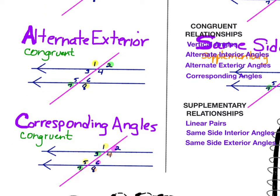The third type of angle relationship that also makes a congruent situation is called alternate exterior angles. The middle part between the parallel lines is interior; exterior is on the outer portion of the top and bottom. Alternate means one's on the left side of the transversal and the other one is on the right side. So one and eight are equal to each other, and two and seven are equal to each other.